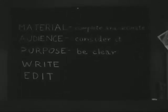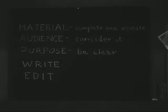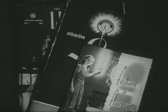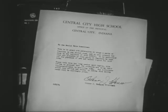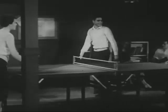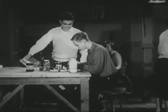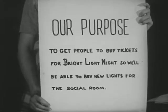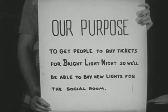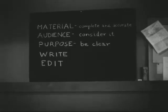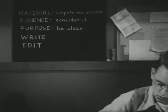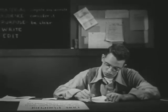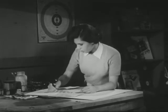And while they are writing, let's think over these principles of effective writing. There are three things you should consider before writing. First, material — become familiar with what you're going to write about; be sure your information is complete and accurate. Second, consider your audience — what will interest them? What will they understand? Third, be clear about purpose — what effect do you want your material to have on your audience? Consider material, audience, and purpose thoroughly, then write, then edit. Now, what does editing mean? Let's see how Jack and Alice and Clyde handle this essential of effective writing.